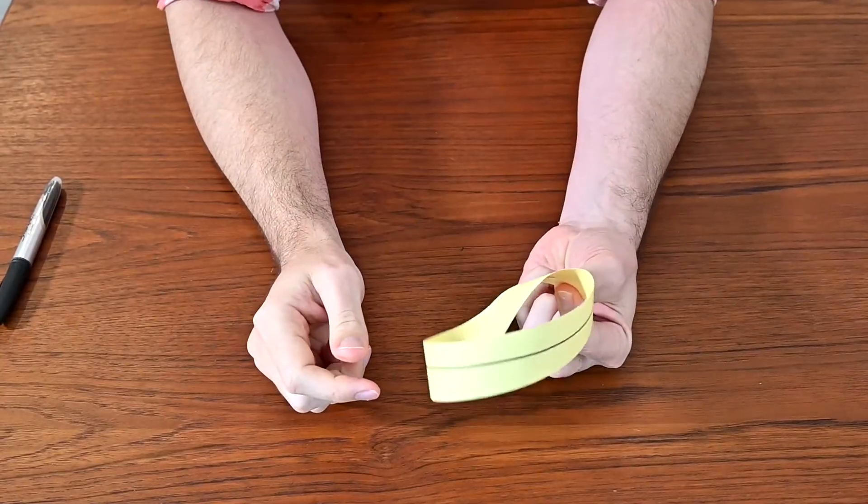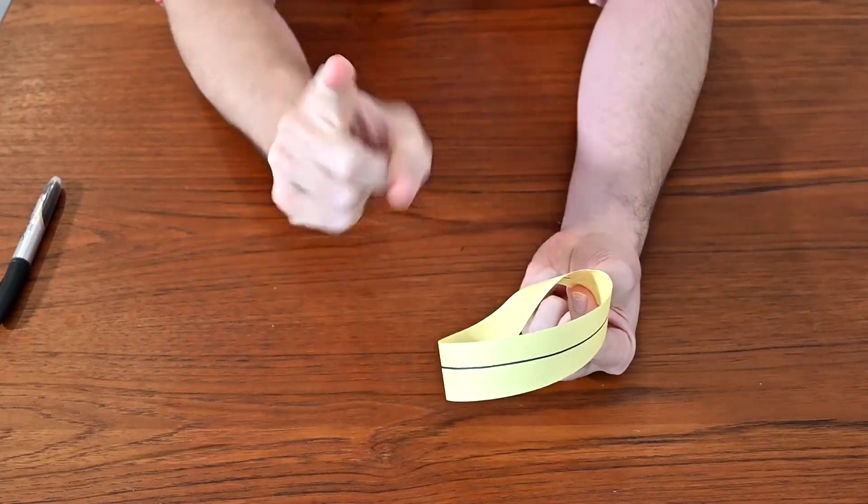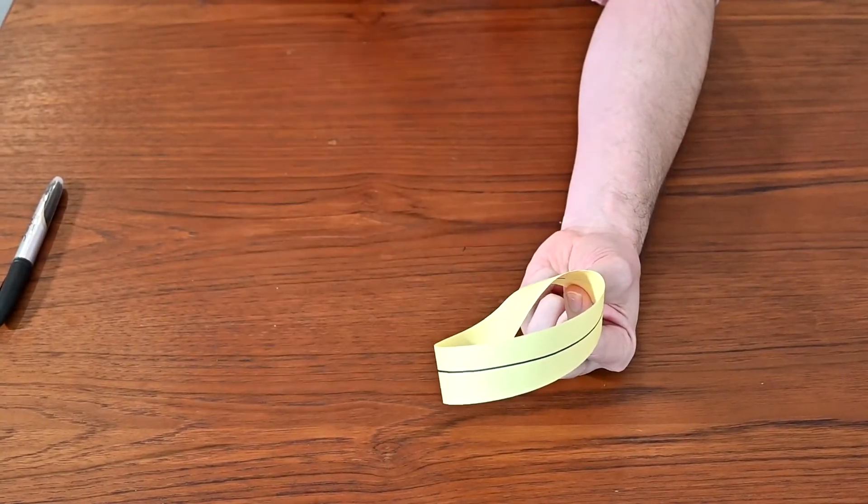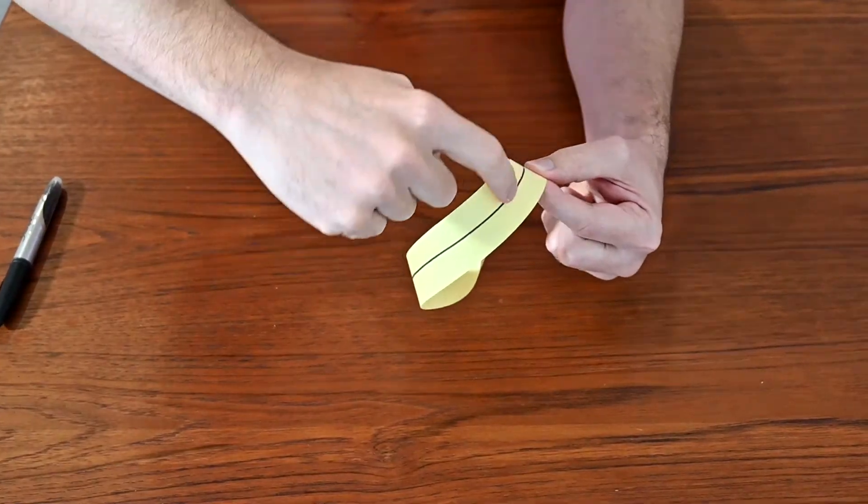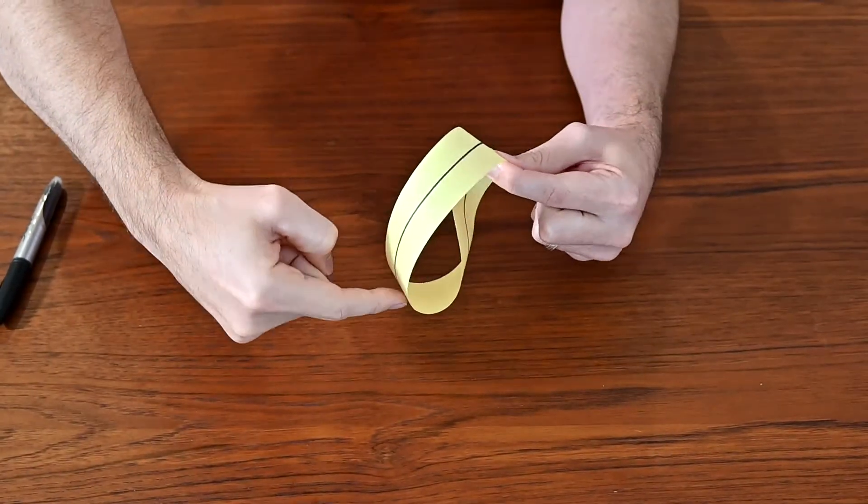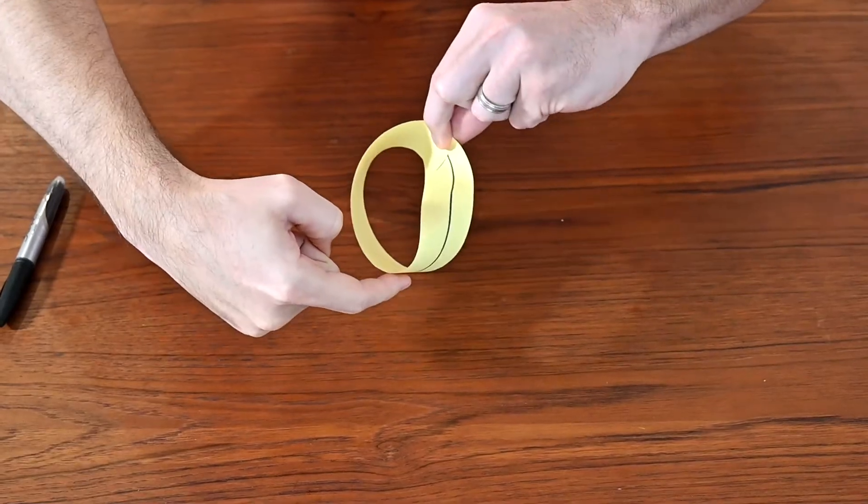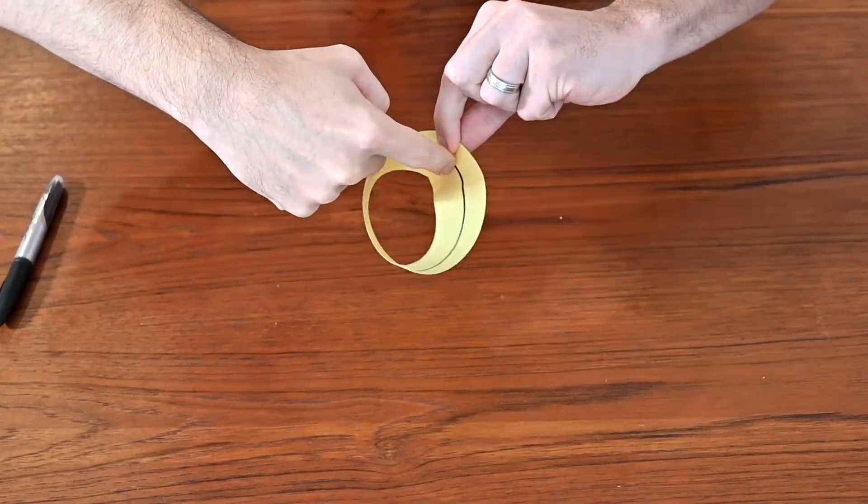And now the question is, do I have one side or two sides? Well, it turns out there's only one side. For example, if I take my finger and I track along, I'm going to go all the way along the outside edge here where I've got that black pen. It comes along.